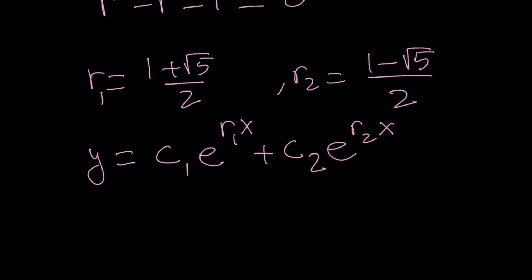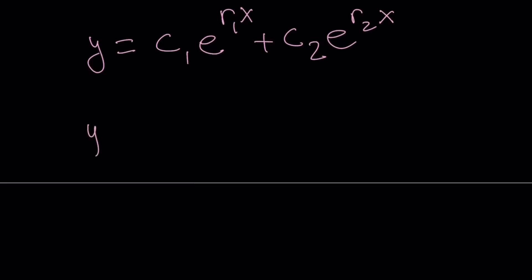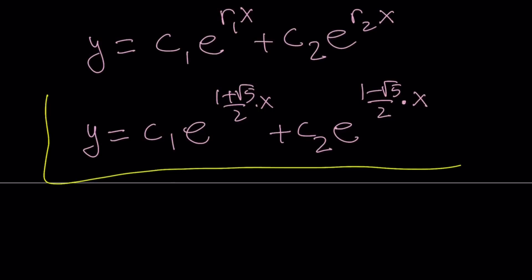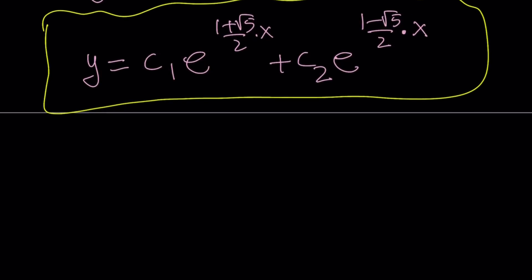So, this is how we can write the solution. Since r1 and r2 are known, let's go ahead and substitute them. So, we get the solution as c1 times e to the power 1 plus root 5 over 2, multiplied by x, plus c2 e to the power 1 minus square root of 5 over 2, multiplied by x. That's a general solution. You can replace c1 and c2 with any real number you want, and you're going to get different solutions every time.